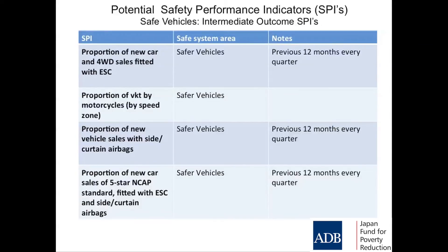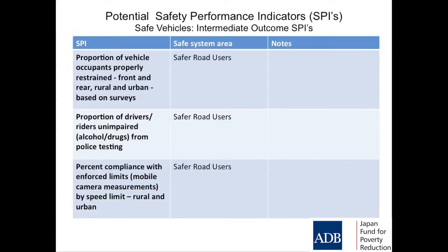For safer vehicles, there's a whole lot of intermediate outcome indicators you could use. There is the sales of five-star NCAP standard vehicles compared with the previous 12 months, measured every quarter. That's something your transport departments should be establishing as a measure. You might publish it — your governments mightn't let you — but it's very powerful if you know what those facts are. You have a position of knowledge and you can predict what's going on.